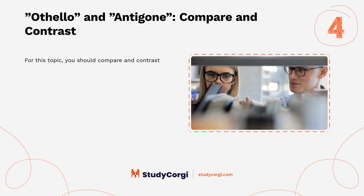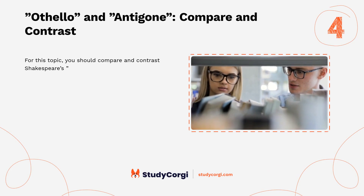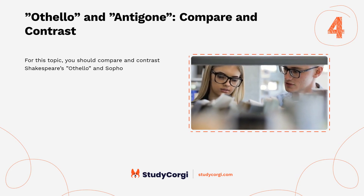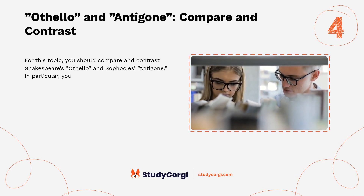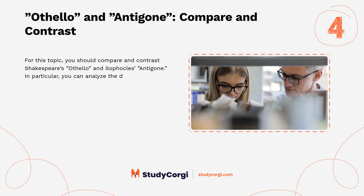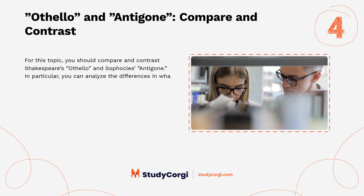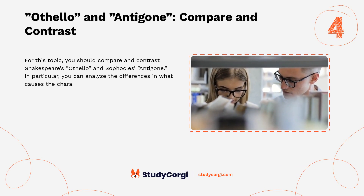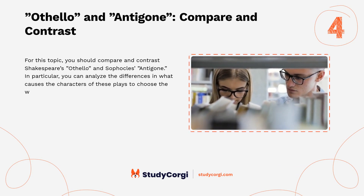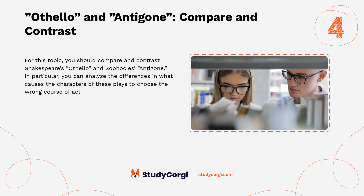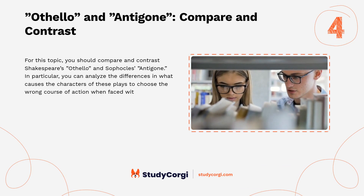Othello and Antigone: compare and contrast. For this topic you should compare and contrast Shakespeare's Othello and Sophocles' Antigone. In particular, you can analyze the differences in what causes the characters of these plays to choose the wrong course of action when faced with life challenges.